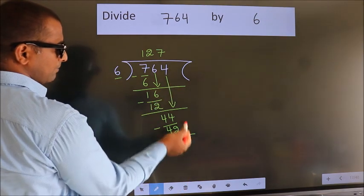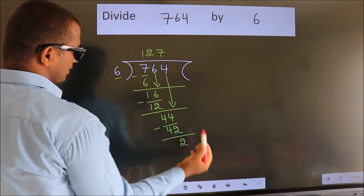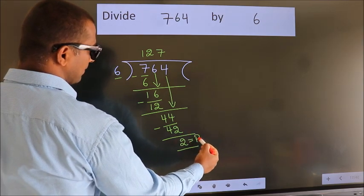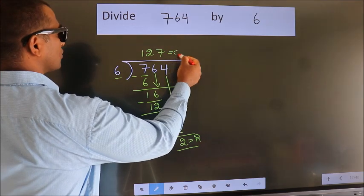No more numbers to bring down. So we stop here. This is our remainder. This is our quotient.